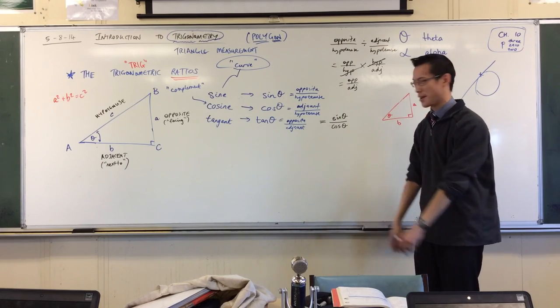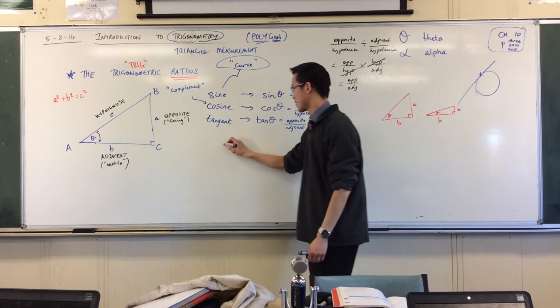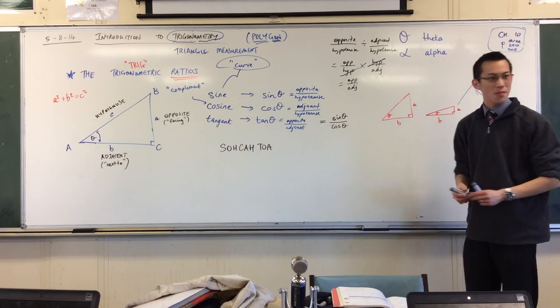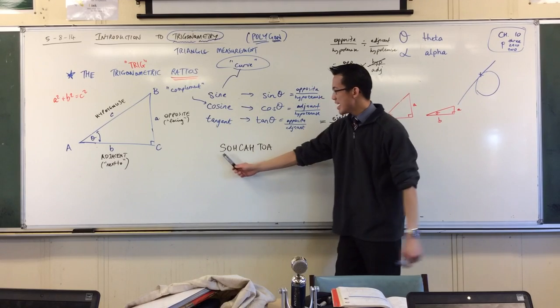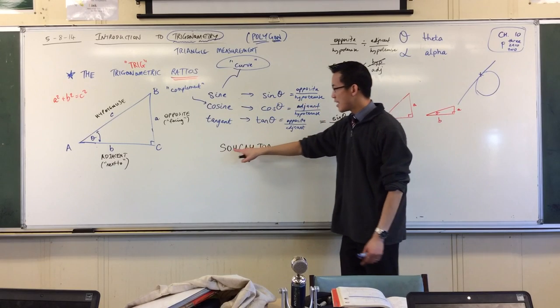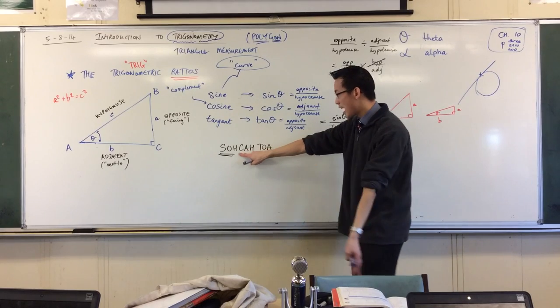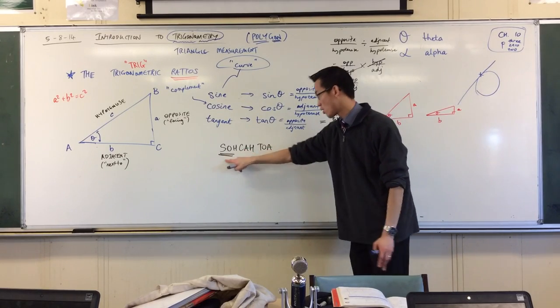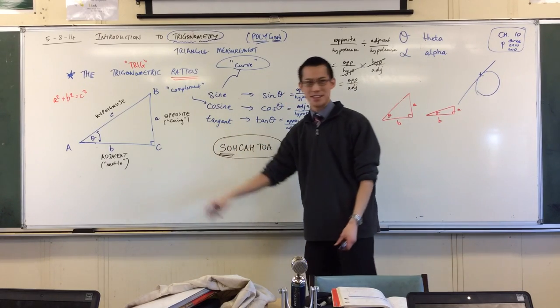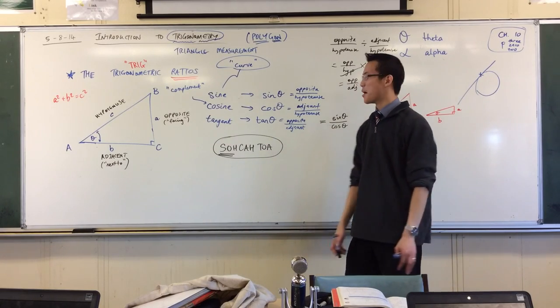So I'm going to teach you a mnemonic which is a little memory device, it's an acronym, it goes like this: SOHCAHTOA. What it stands for, SOHCAHTOA is for each of the ratios. So sine starts with an s, and sine is opposite on hypotenuse, so that's the SOH of SOHCAHTOA. Cosine which starts with a c is adjacent on hypotenuse, so SOHCAH. And tan is opposite on adjacent, so SOHCAHTOA. You're like that's a made up word, it's not real. That's true, but it's quite easy to say and it's quite easy to remember.